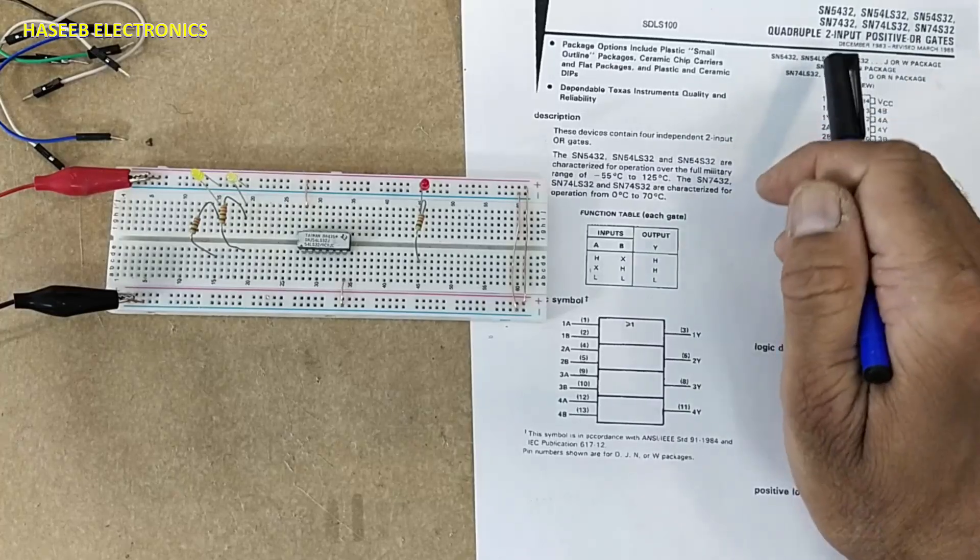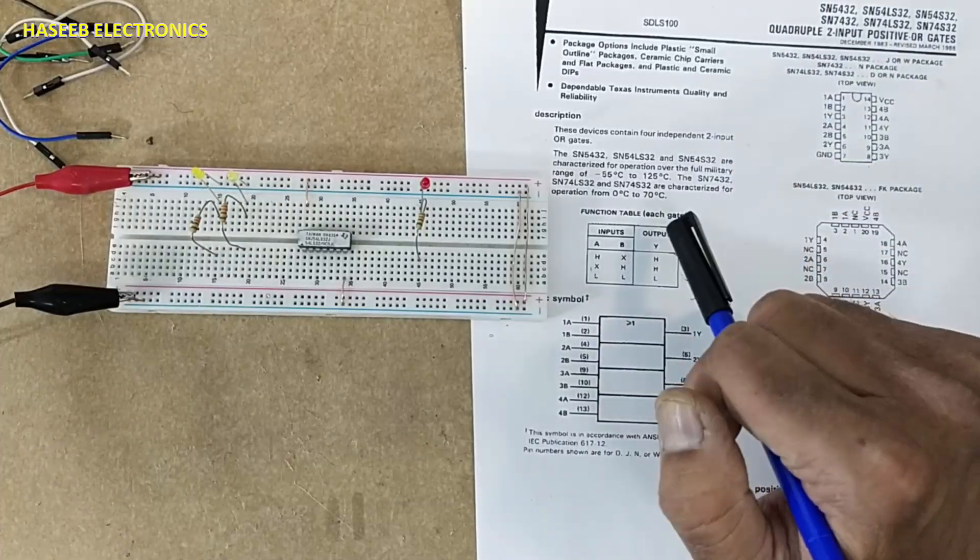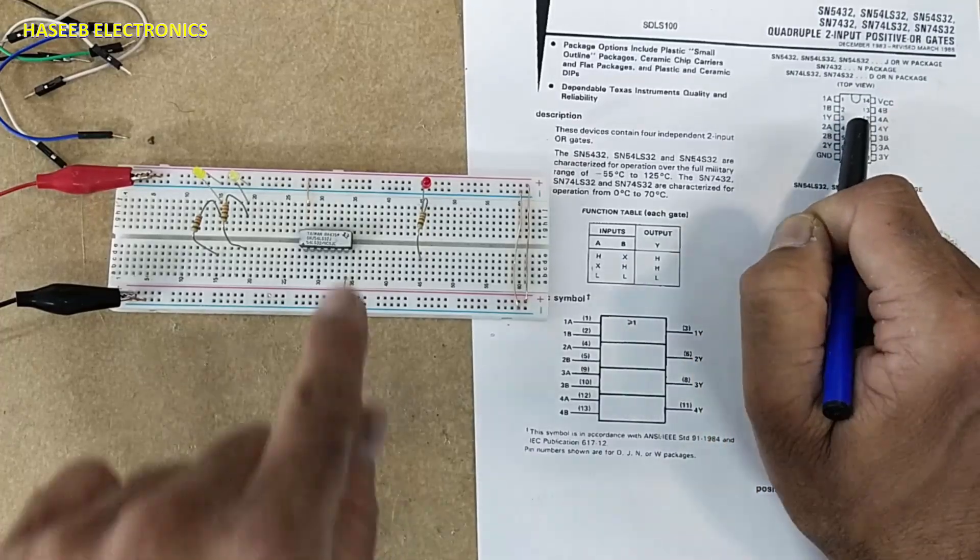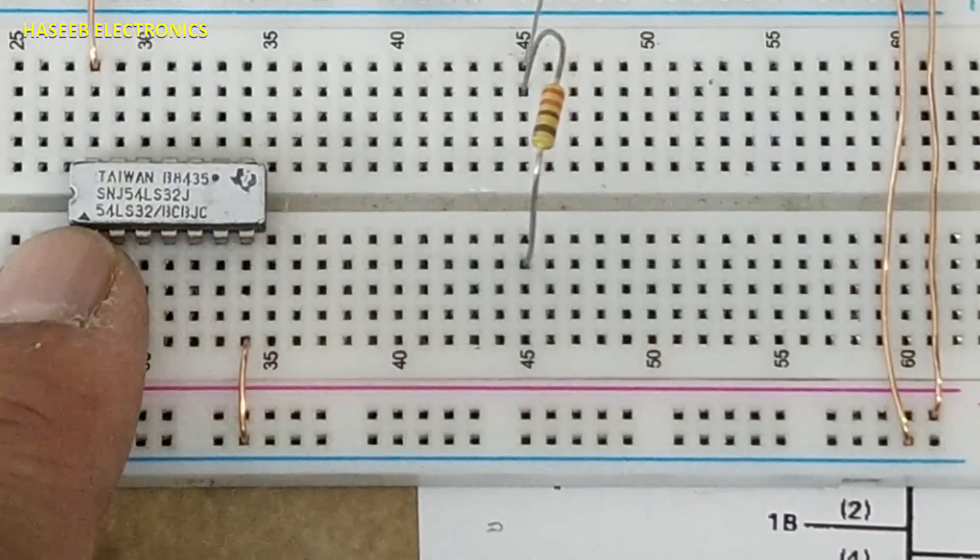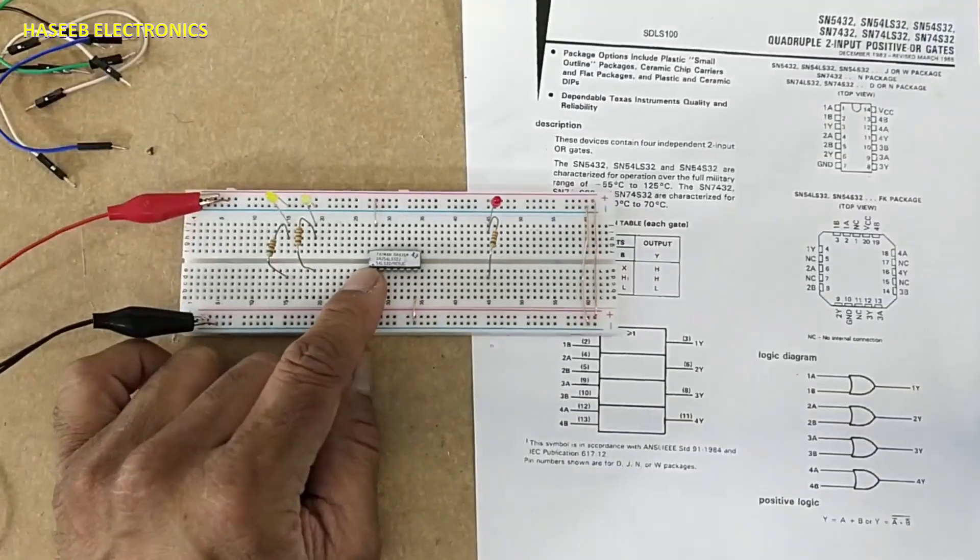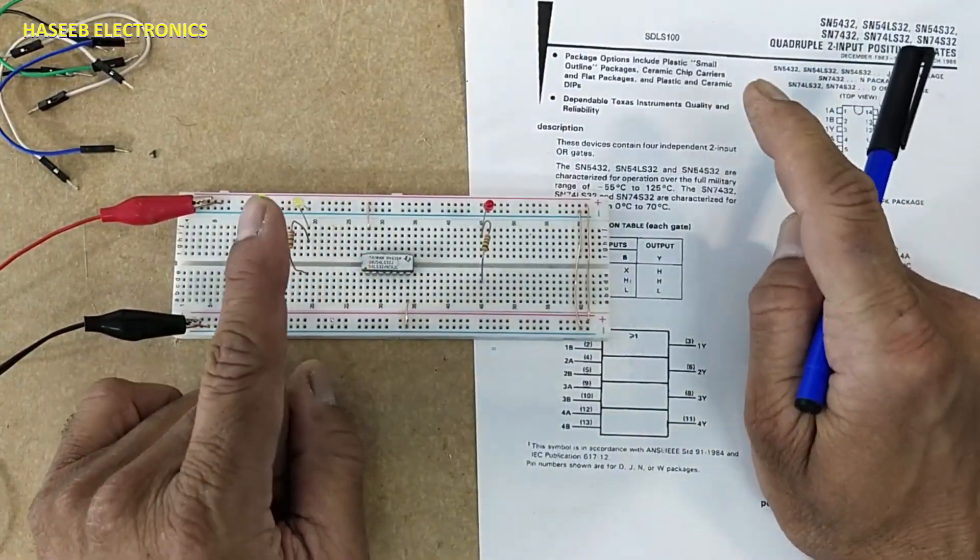This is the family quadruple four input positive OR gate 14-pin IC. This one, either it is in 54 number or 74 number, these are same. Difference between 74 and 54 is temperature difference.